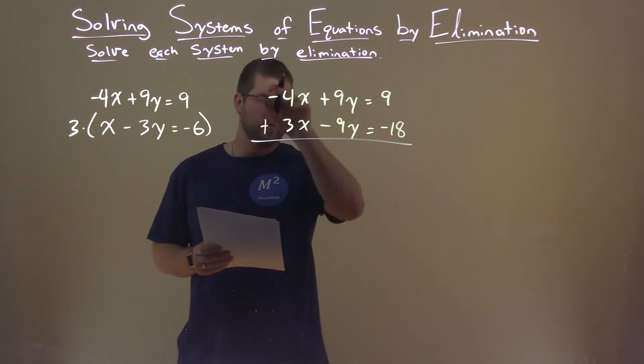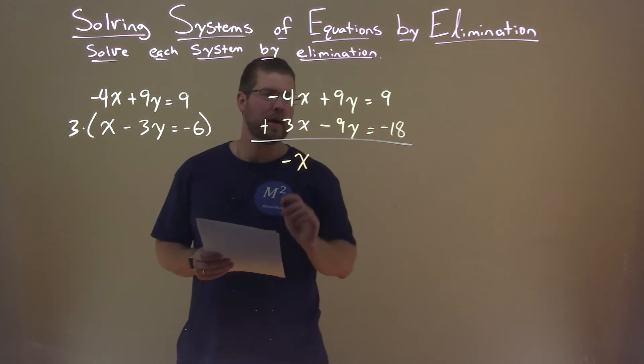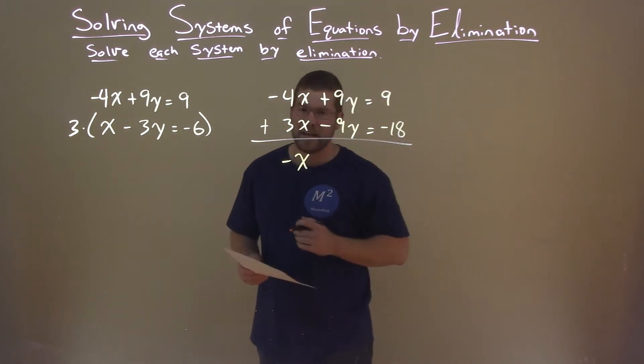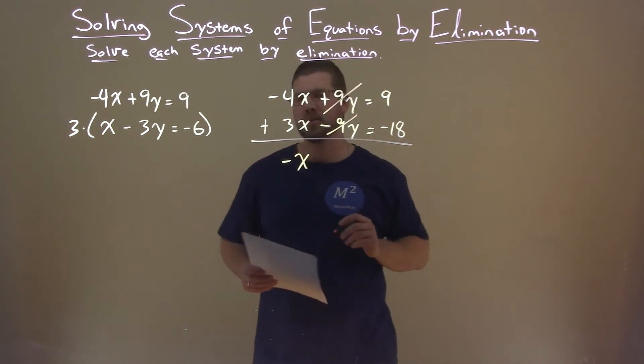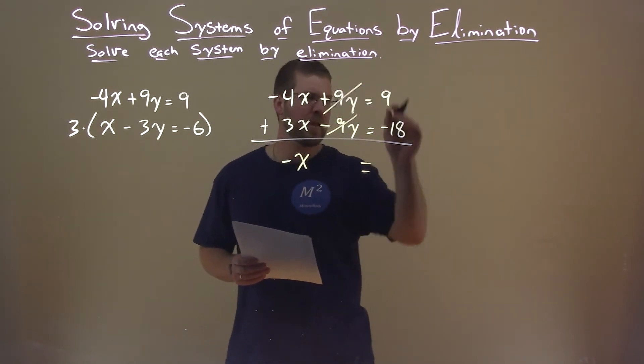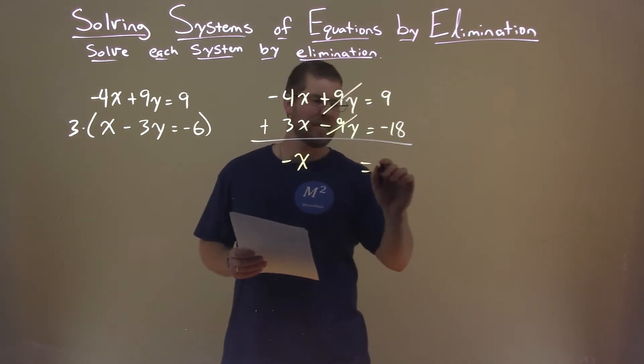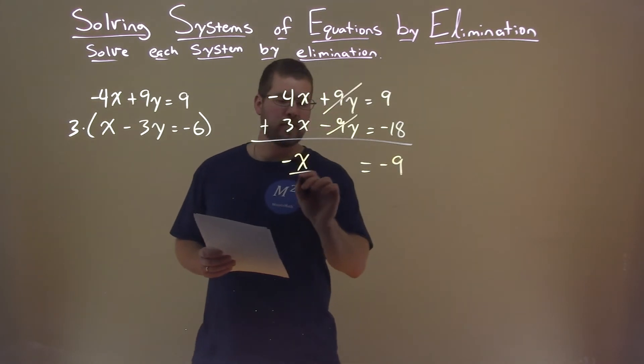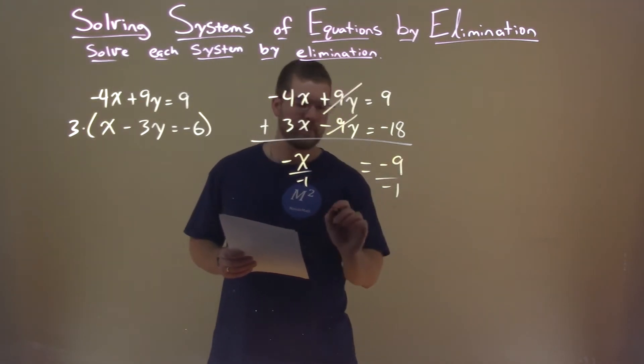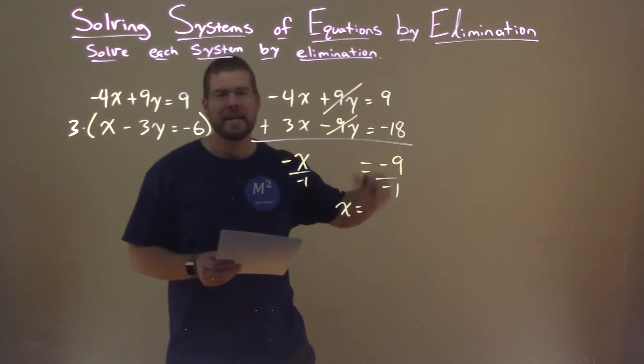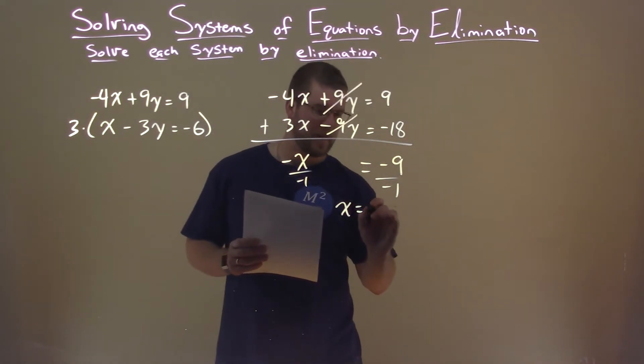Minus 4x plus 3x, let's add them together, is minus 1x. 9y plus a negative 9y is 0y, don't need to write that. 9 plus a negative 18 is negative 9. Divide both sides by negative 1, and we're left with x by itself. Negative 9 divided by negative 1 is positive 9.